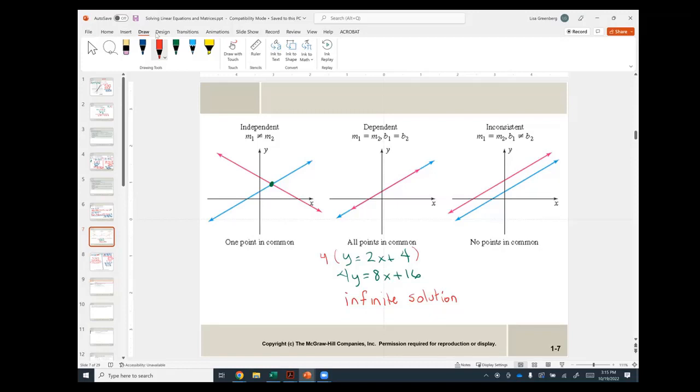And inconsistent means that they never meet. These are two parallel lines. They never touch. And I have no solution for this. And how would I know? Let's say I have an equation like y equals, I'll just use 2x plus 4. And I have another equation.